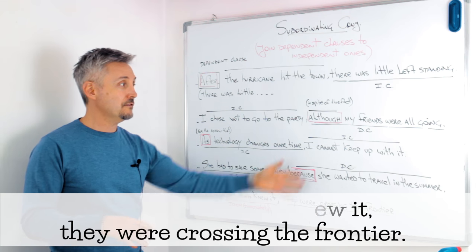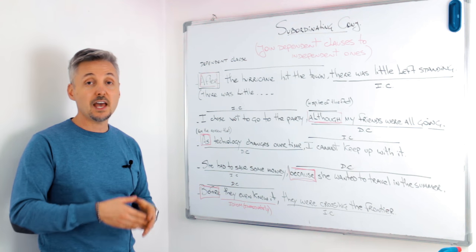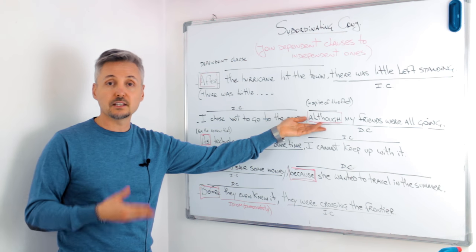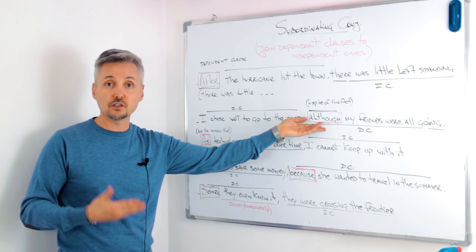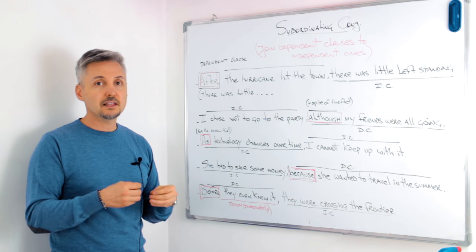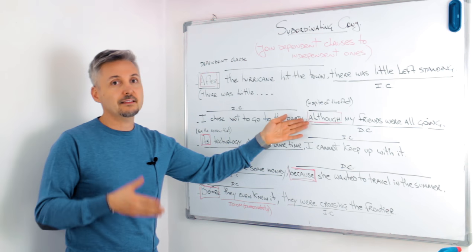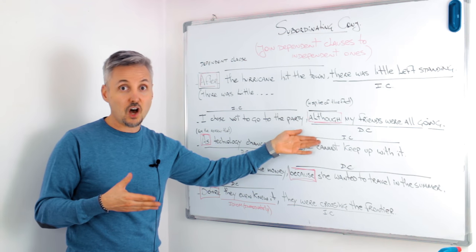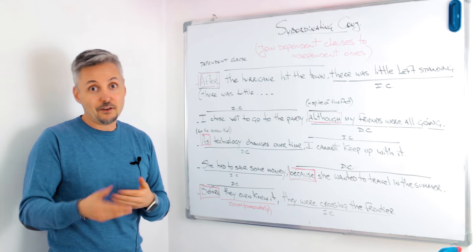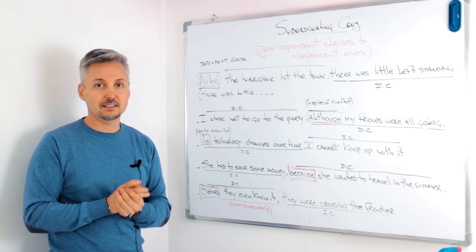As you can see from all these sentences, when we have the subordinating conjunction in the clause, that means we need something else — it's a dependent clause. We need another part of the clause to complete the meaning of the sentence.